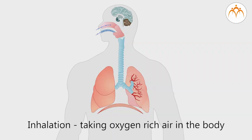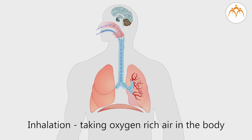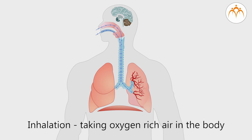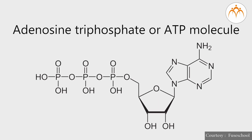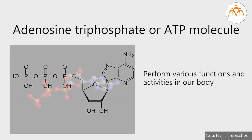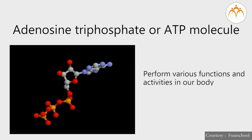This oxygen is supplied to various body cells and it is used to oxidize food that we eat. Thus finally food energy gets trapped in adenosine triphosphate or ATP molecules. Our body uses these ATP molecules to perform various functions and activities. Hence respiration must occur continuously for constant supply of energy.